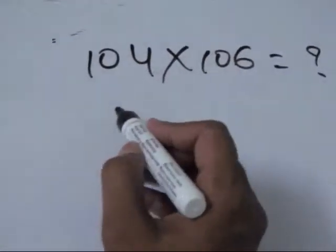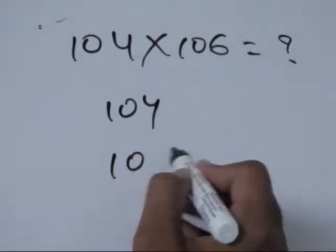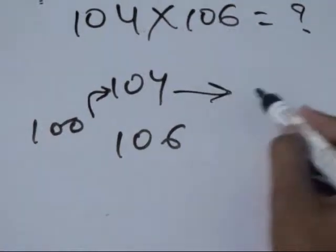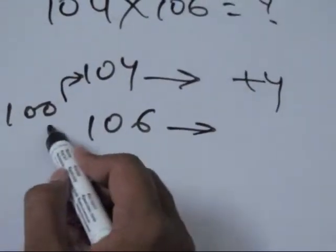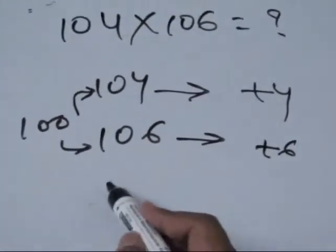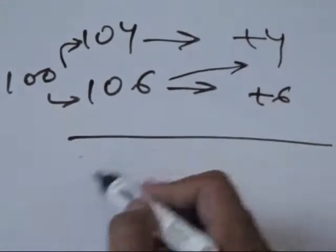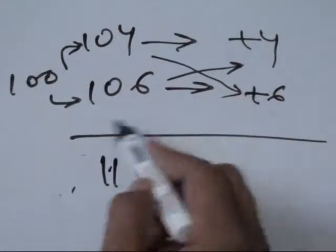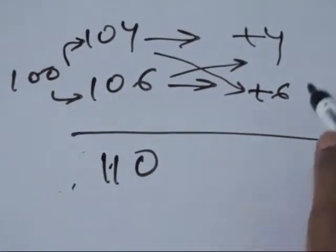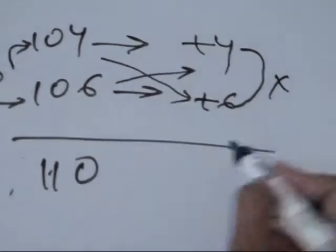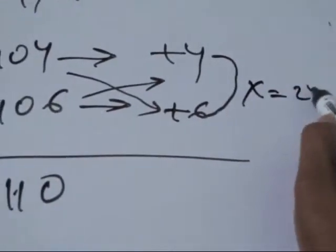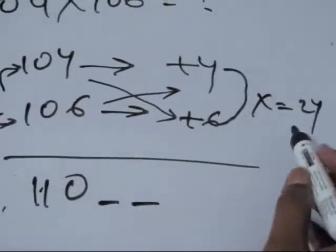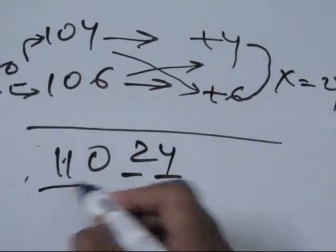Apply the same rule to 104 into 106. The first number is 104 and the other number is 106. The nearest base is hundred. How much away from hundred is the first digit? Plus four. And how much away is the second digit from hundred? Plus six. So the first step is add the first corner: 106 plus four is 110. Or 104 plus six is also 110. The second step is multiply plus four and plus six — it comes as twenty-four. Base is hundred, so two places are left. Fill these two places with twenty-four. So the answer is 11024.